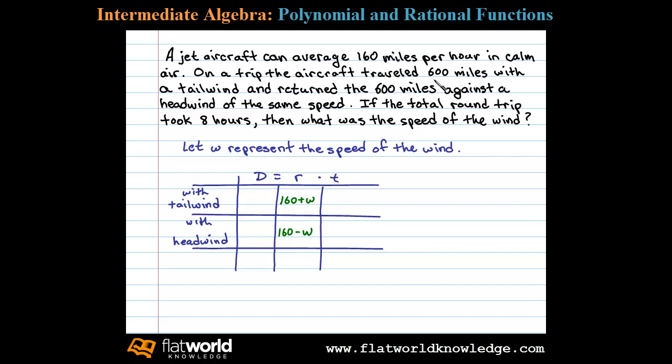The problem also states that the aircraft flew 600 miles with a tailwind, so we'll place a 600 here for D. Now it flew the same 600 miles, it flew 600 miles against a headwind of the same speed, so we'll place 600 miles here for the return trip.